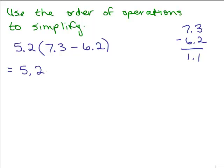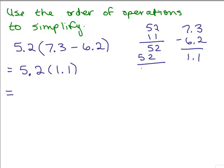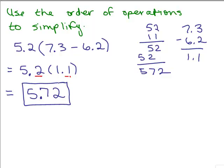So this then is 5.2 times 1.1. When you have a number next to parentheses it means we're going to multiply. Remember how to multiply with decimals — you just need to do 52 times 11. I've done a video on how to multiply by 11 the easy way. In any case, 52 times 11 is 572, but we have one place after the decimal point and another digit after the decimal point, so our final answer has to have two digits after the decimal point. So our answer is 5.72.